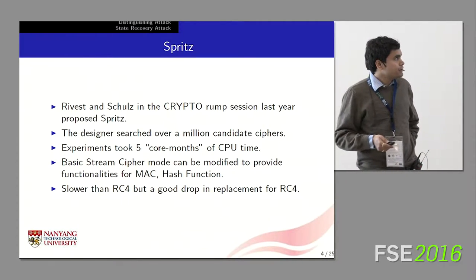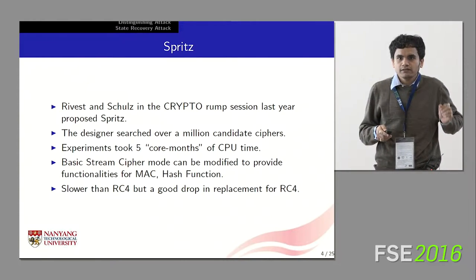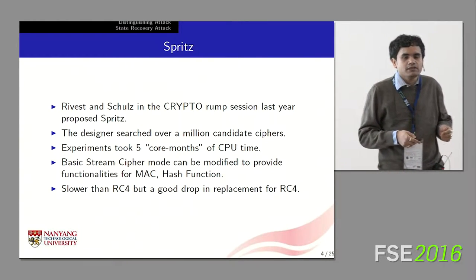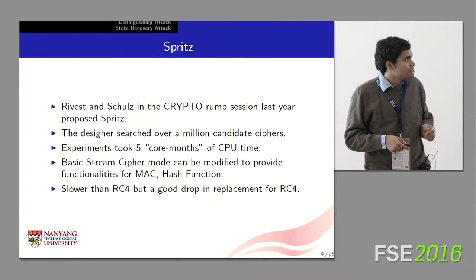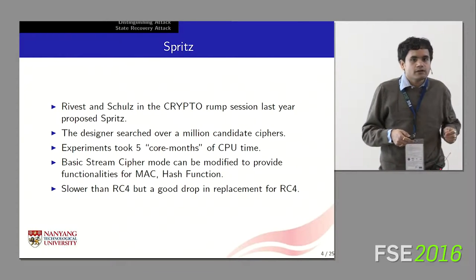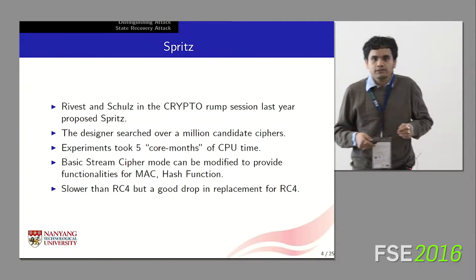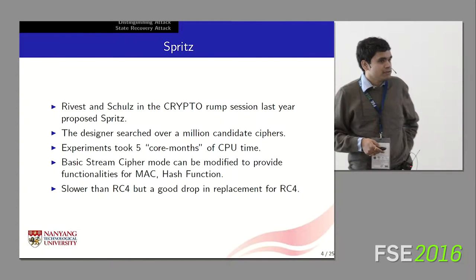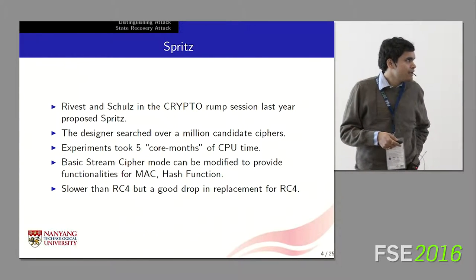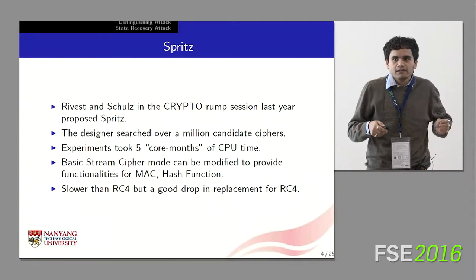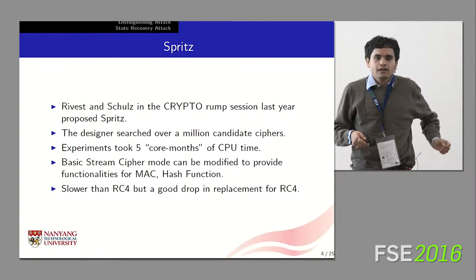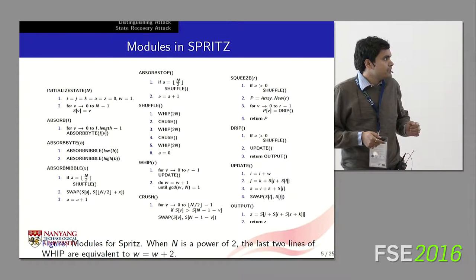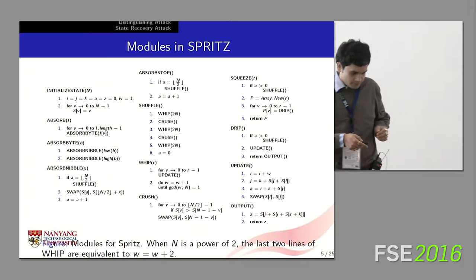One good thing about Spritz is that, apart from the basic stream-cipher mode of operation, the designers also specify techniques that can be used to achieve the functionalities of a MAC, a hash function, and authenticated encryption with associated data. Because the structure of Spritz is slightly complicated, its software speed is significantly less than RC4, but if one is prepared to overlook the speed aspect, it seems to be a very good drop-in replacement for RC4.